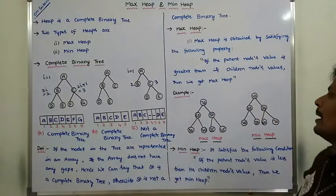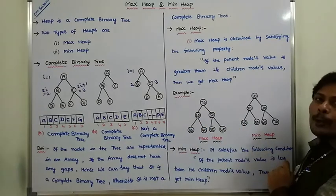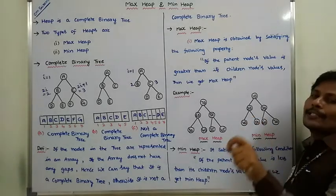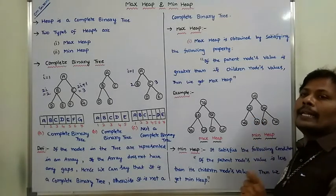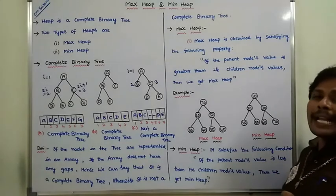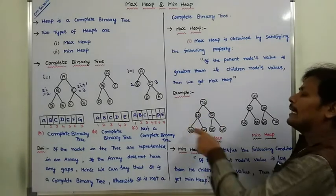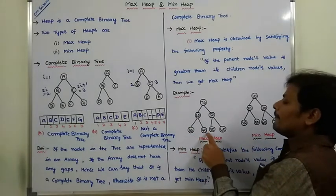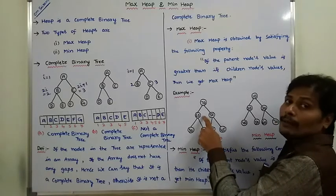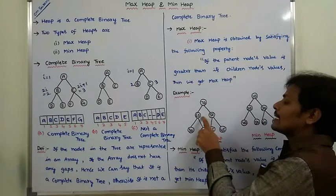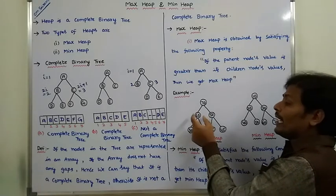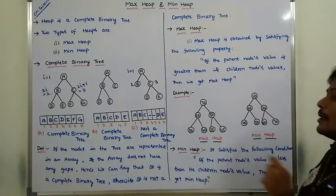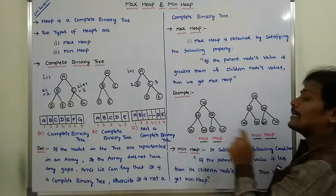What is maximum heap? We can take any parent node. If the parent node's value is greater than its children's value, hence we can say that binary tree satisfies the maximum heap property and is a maximum heap. For example, here 30 and 40 are children and their parent is 60. 60 is greater than 30, and 60 is greater than 40. The parent node value is greater than its children's node values.